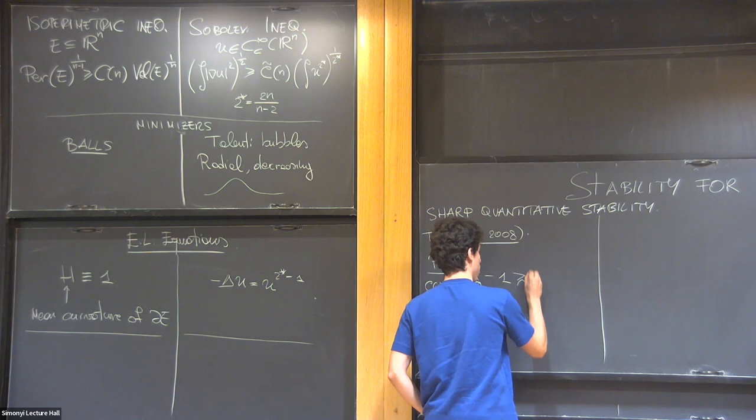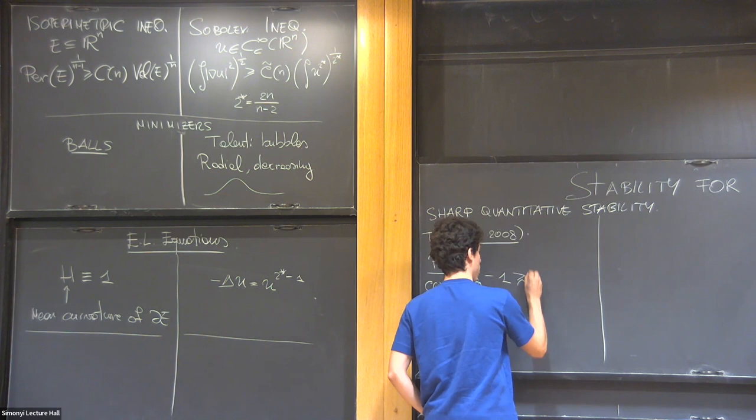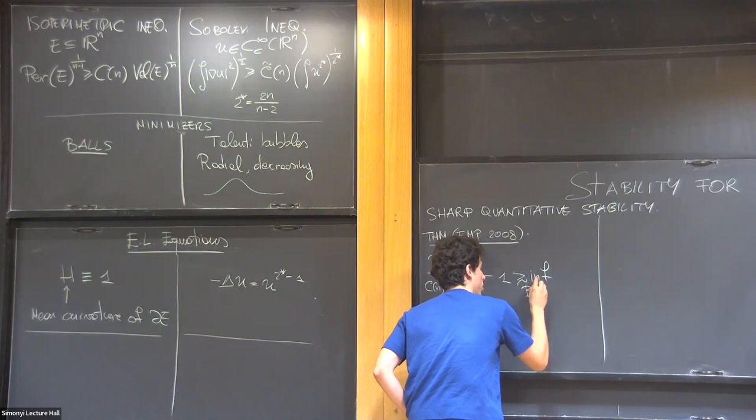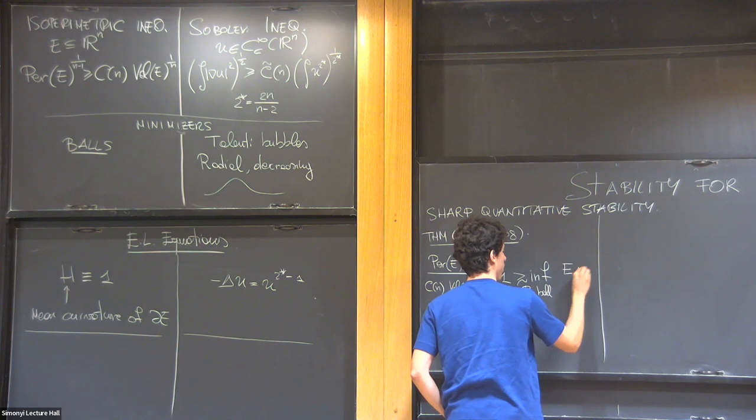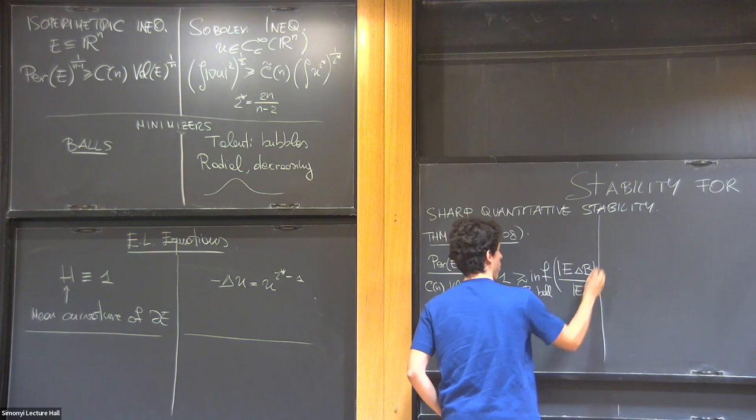And so what you want is to make the isoperimetric inequality quantitative. So you take the isoperimetric ratio. It tells you that this quantity is greater or equal to zero. But in fact, you'd like to say that this quantity controls your distance from the minimizers, which are balls.